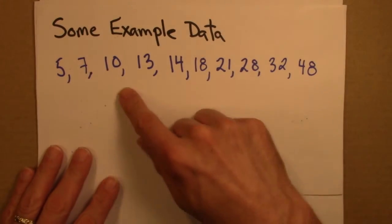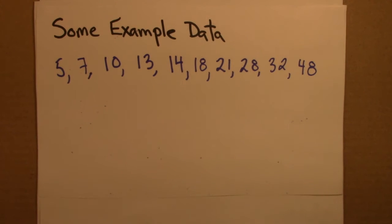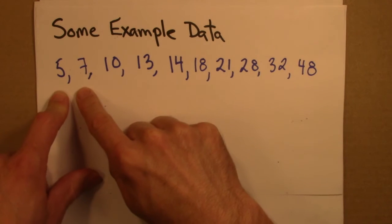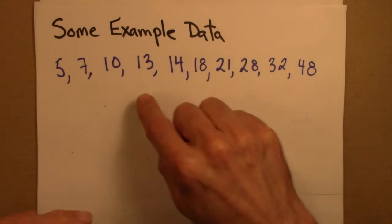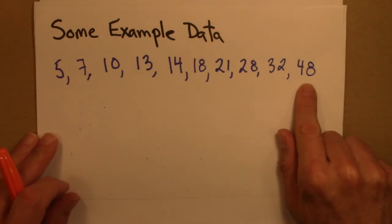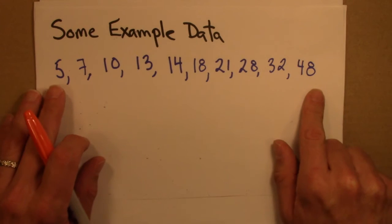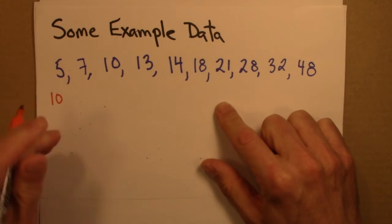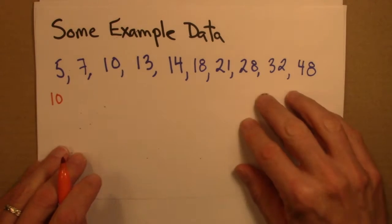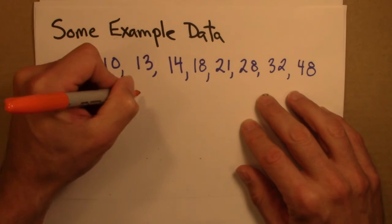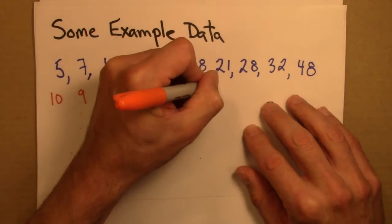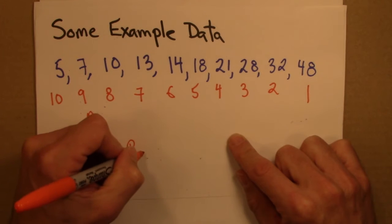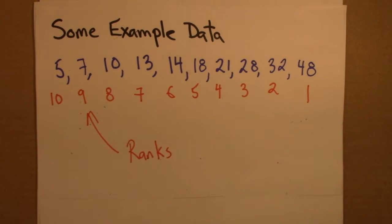So here's the example data we've started off with. And there are 10 data points. And in this case, I've already sorted the data for you. So they're in increasing order. And there are 10 of these total. So I'm going to rank them like this. The one that comes first I'll call 10. And then 9, 8, 7, 6, 5, 4, 3, 2, 1. So these things in orange are the ranks.